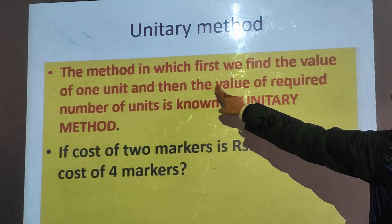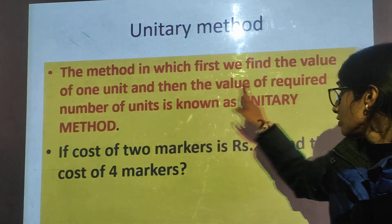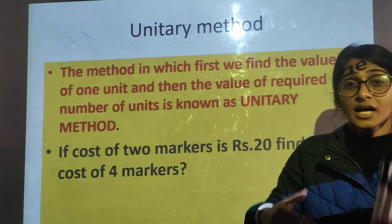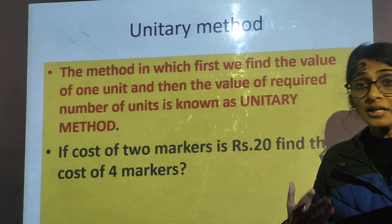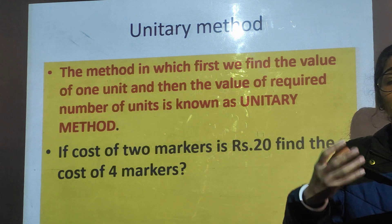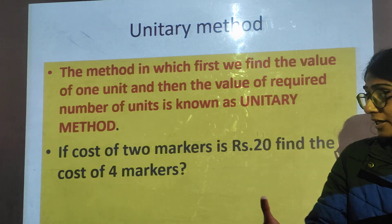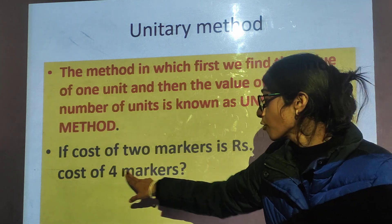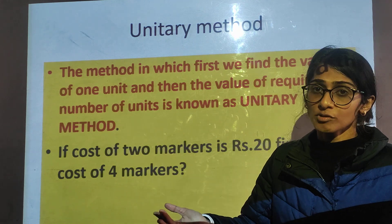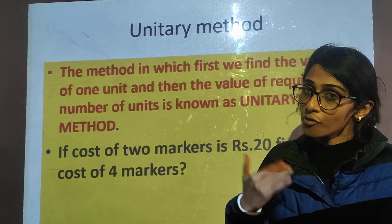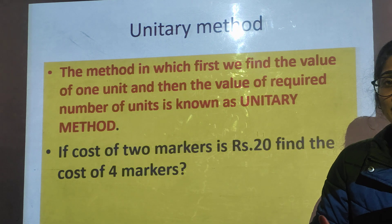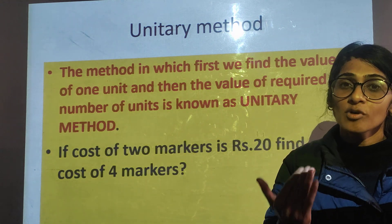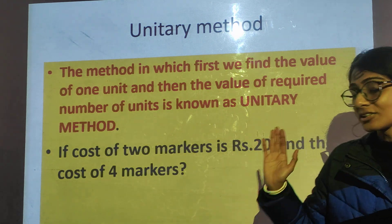Now what you have to do is find the value of the required number of units. Required number of units means for how many markers you are asked to find the cost. Here the required number of units is 4 markers, since you have already found the cost of 1 marker — the value of 1 unit — that is Rs. 10.